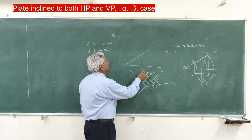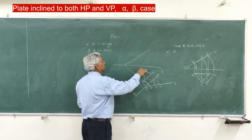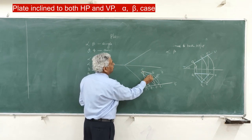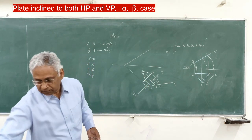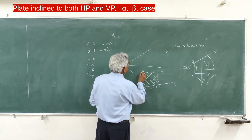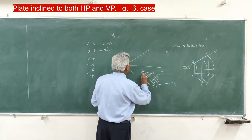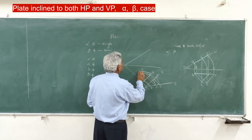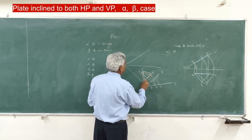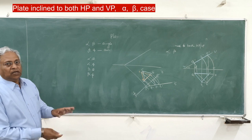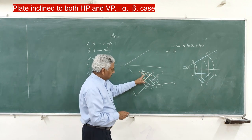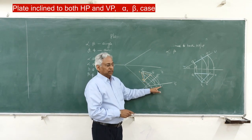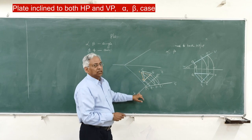So the plan moves parallel to the ground line. C will move to this position, B will come to this position, A will come to this position, and this will be the final points C, B, and A. That is the plan after rotating the plate.